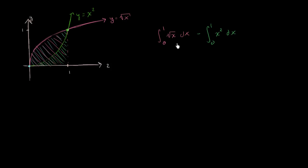And this would be completely legitimate. And you might say, hey look, I have the same boundaries of integration, I have dx right over here. Couldn't I have also written this as the definite integral from 0 to 1 of square root of x minus x squared dx? And if you ask that, I would say, absolutely.